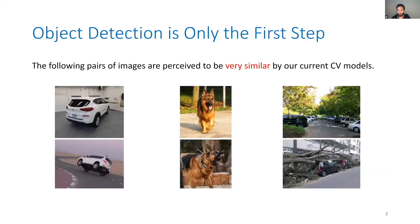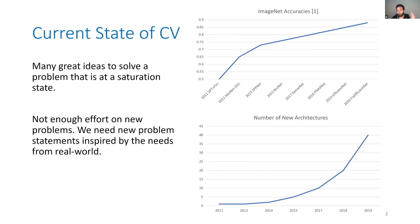So what are the open problems? What I'm telling you is: don't focus on the very first layer of computer vision, which is detection, object detection. There are many more interesting problems in this field and we're going to talk about them.